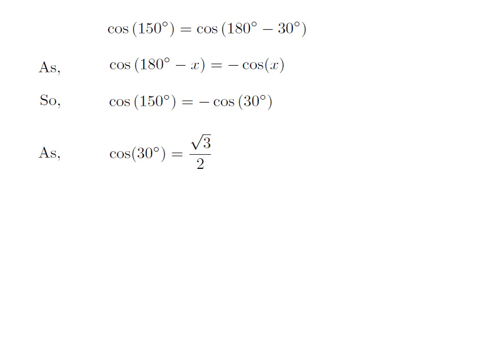We know the value of cosine of 30 degree is equal to square root of 3 upon 2. So, value of cosine of 150 degree is equal to minus square root of 3 upon 2.